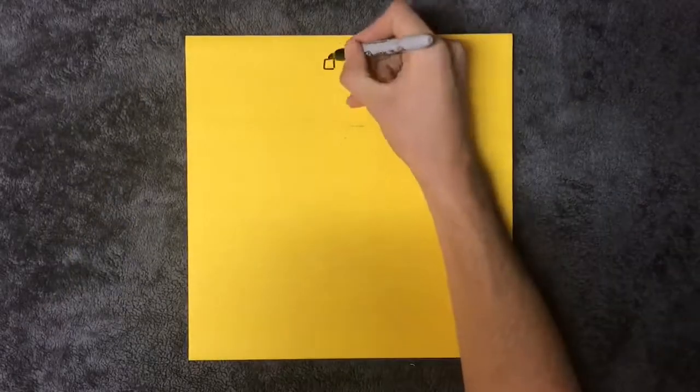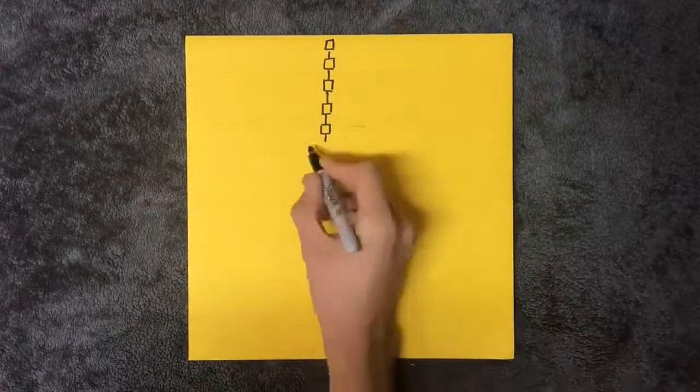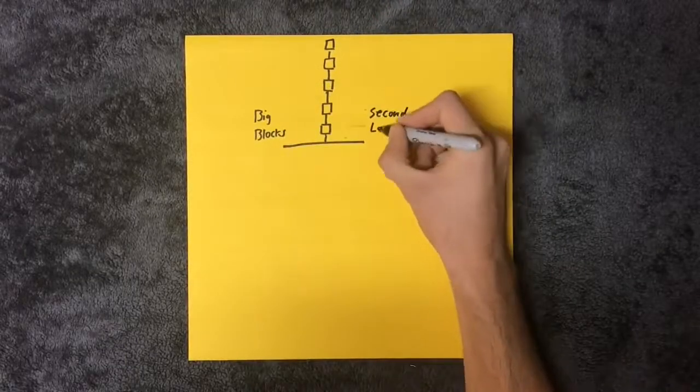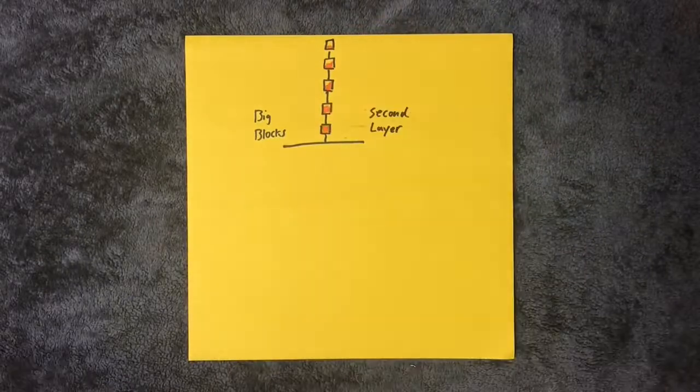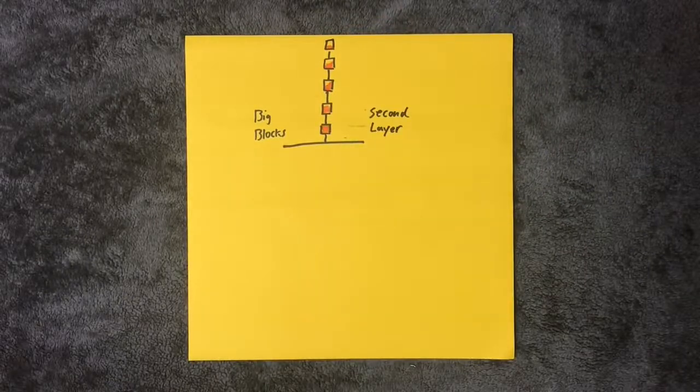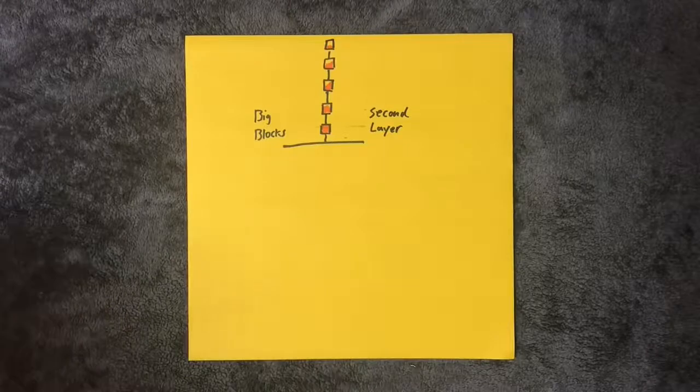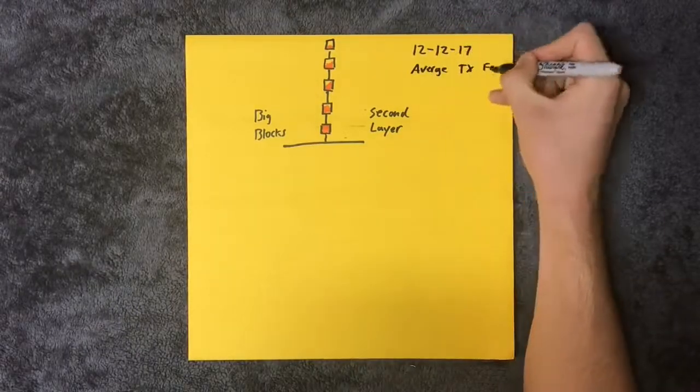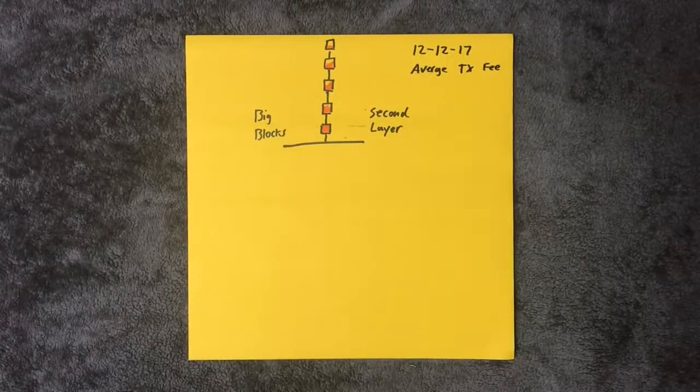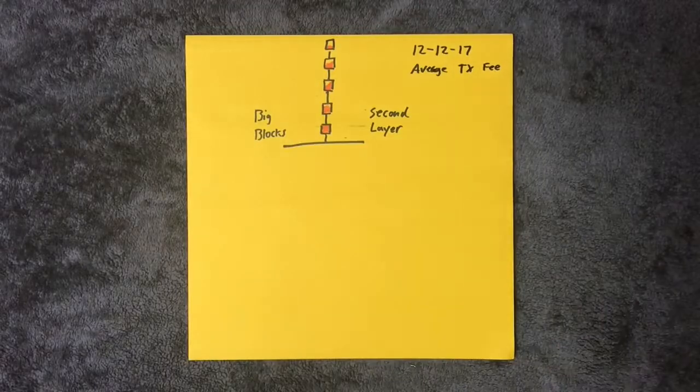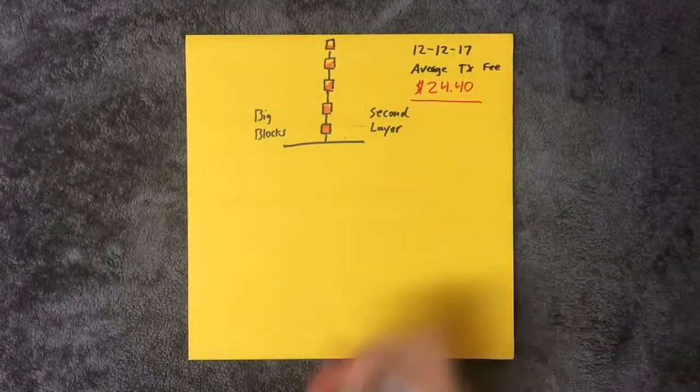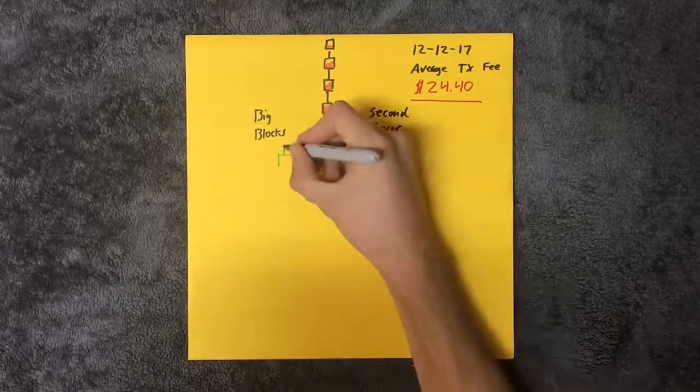Transaction fees have risen because of the block size. The block size is one megabyte currently and only allows for a few transactions per second to take place. Many more happen than this, so the people who pay the highest fee get to go first in line. On December 12, 2017, the average transaction fee today was twenty-four dollars and forty cents.